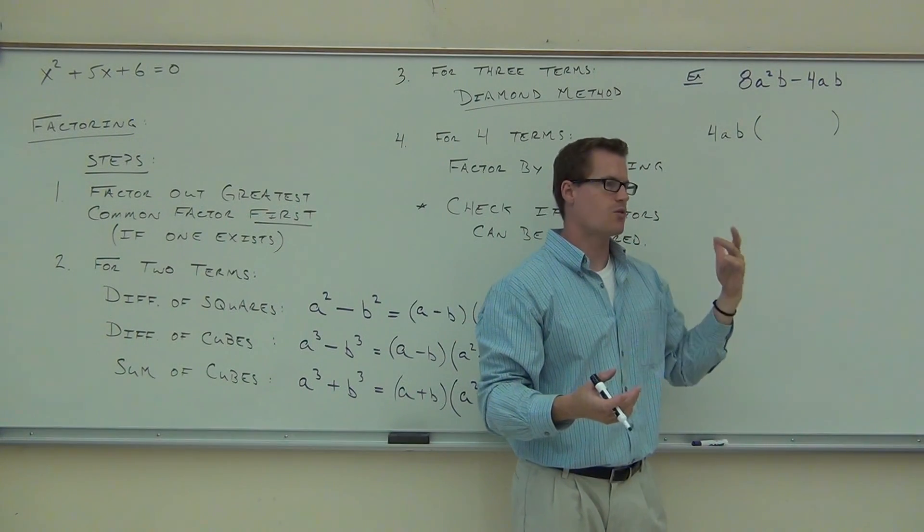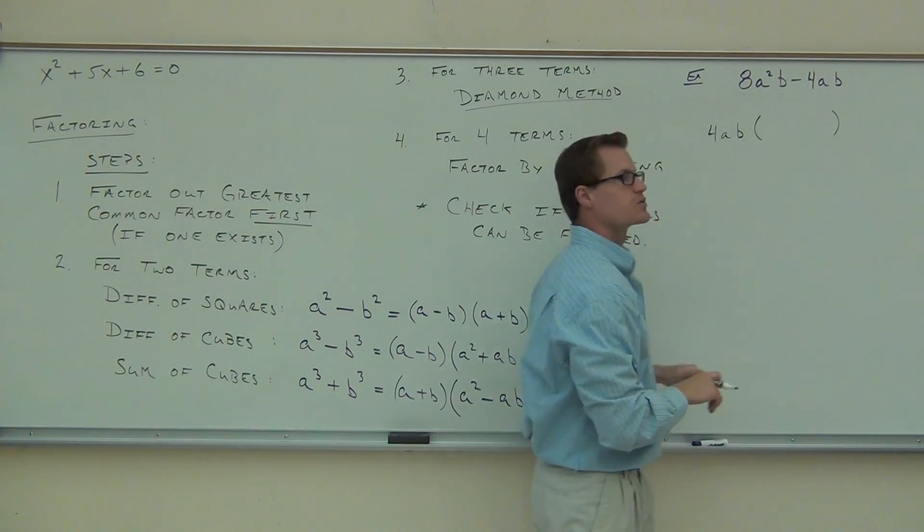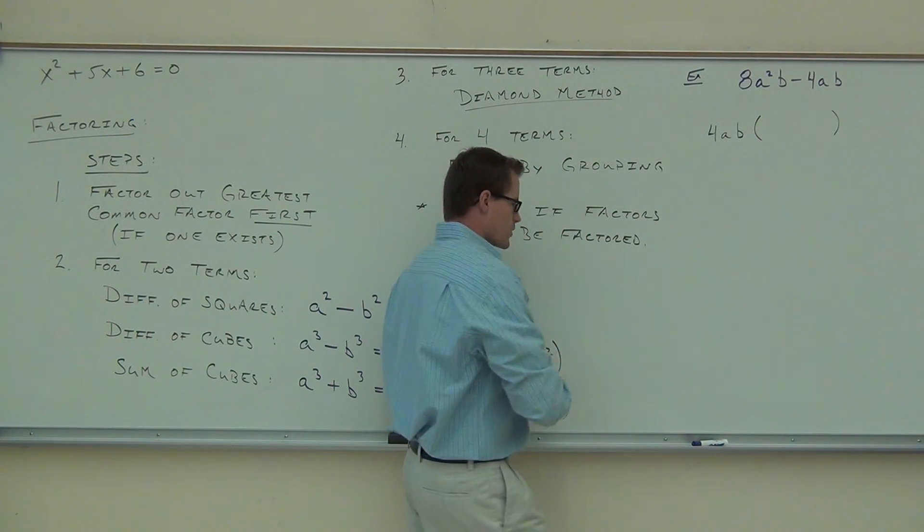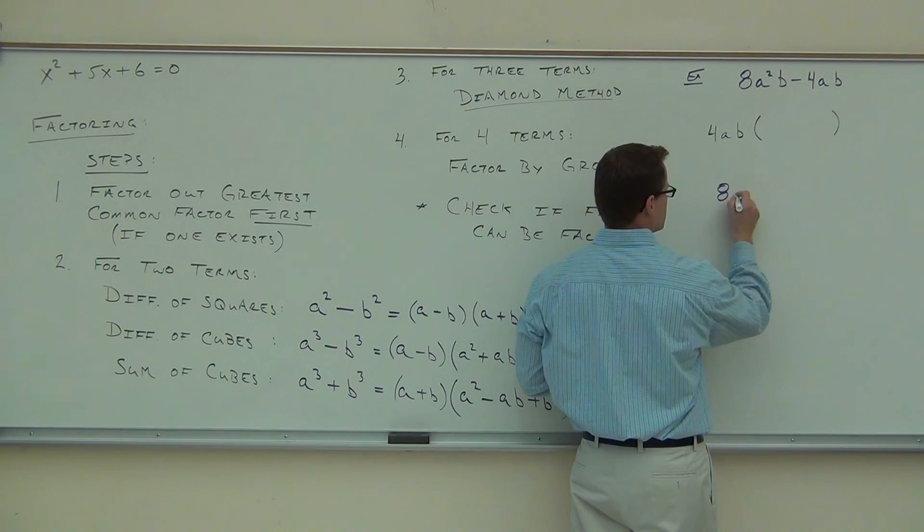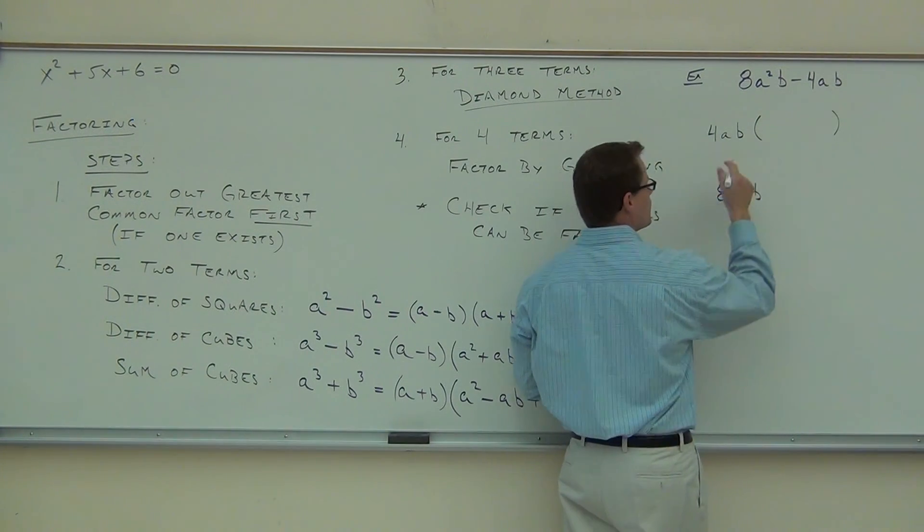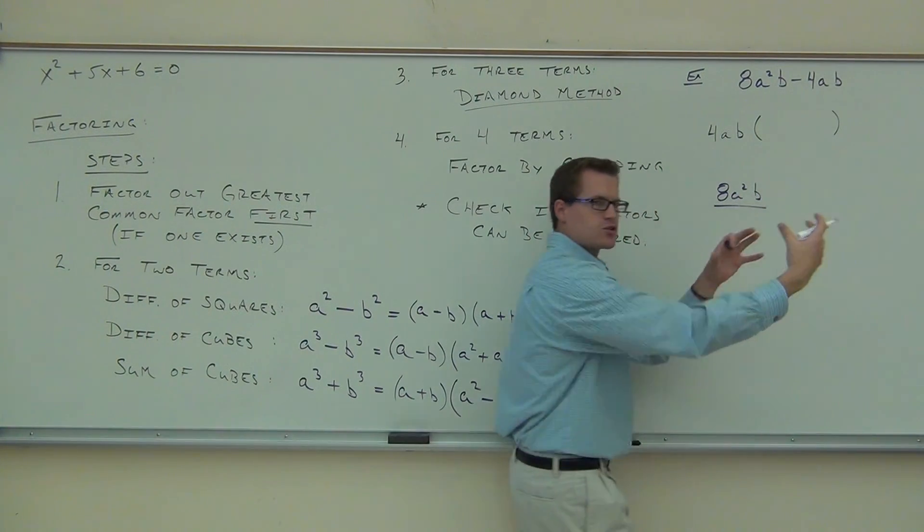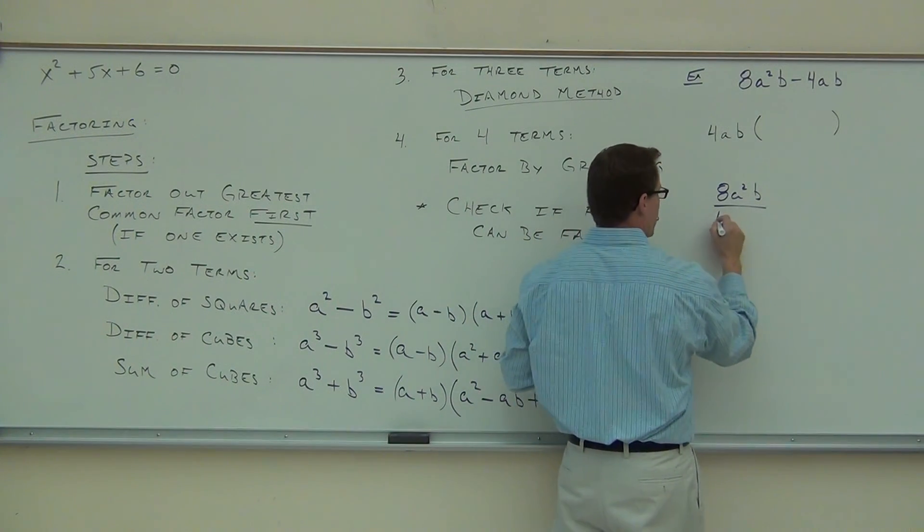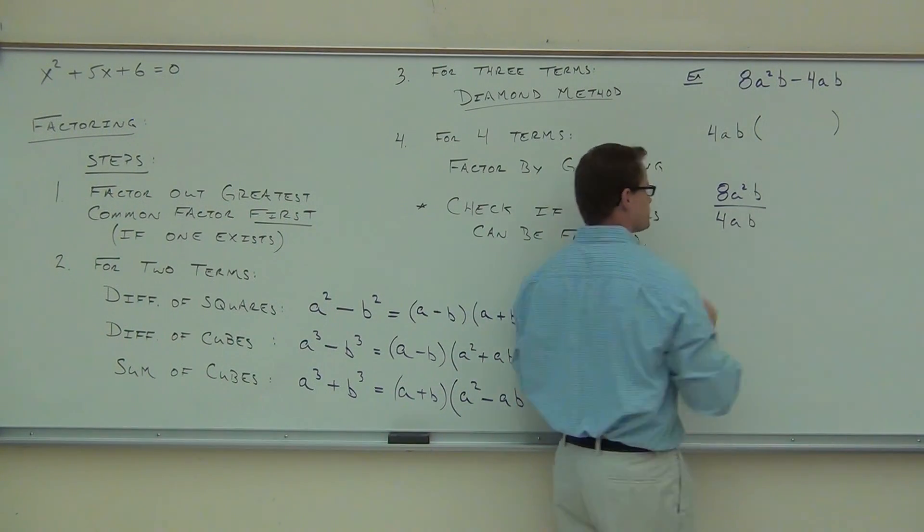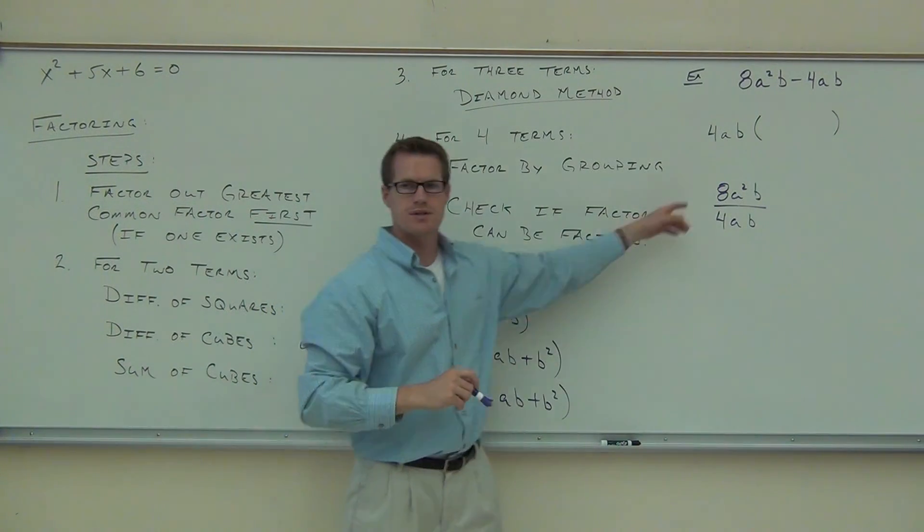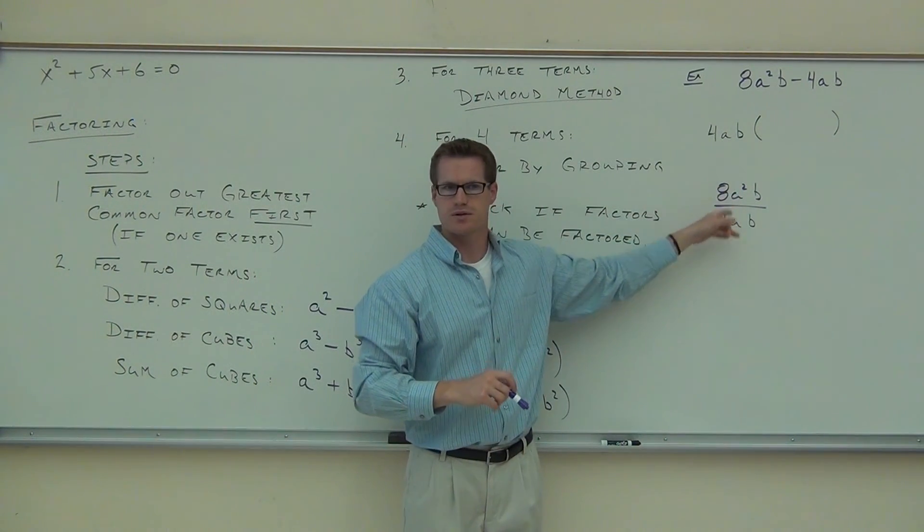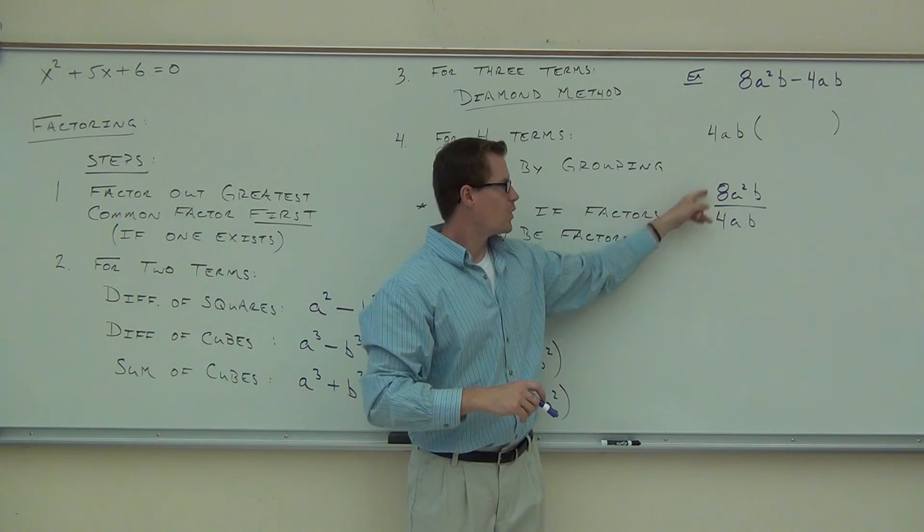You might be wondering, why in the world would we want to create parenthesis? But I'll show you later on that problem why we have to have this. So we're dividing out. We are factoring out. We are creating parenthesis. What we're going to put in here is the quotient of this and our greatest common factor, and this term and our greatest common factor. If you're good at this, you don't need to do any work other than in your head. If you're not so great at this, I'll give you a method on how to find these things.